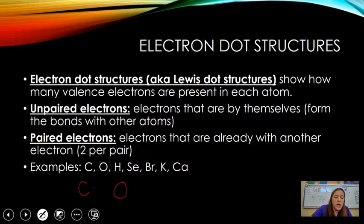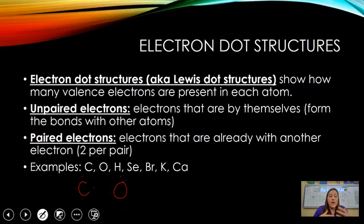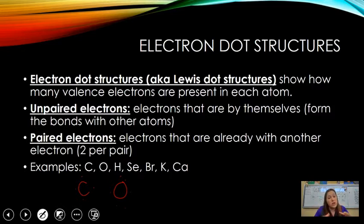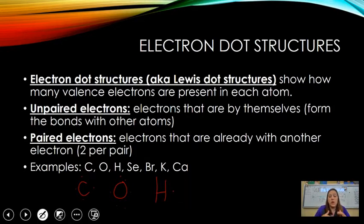Oxygen has one, two, three, four, five, six valence electrons. Based on where it is on the periodic table — group 6A or group 16 — it has two spots available for bonding. So oxygen can share electrons or it can take electrons from something.